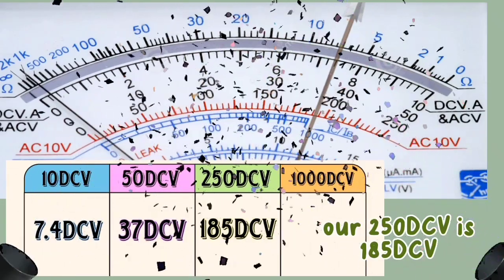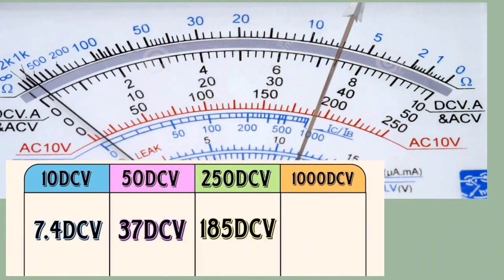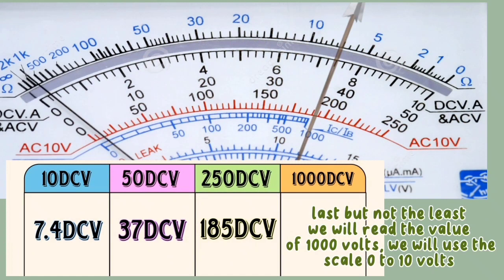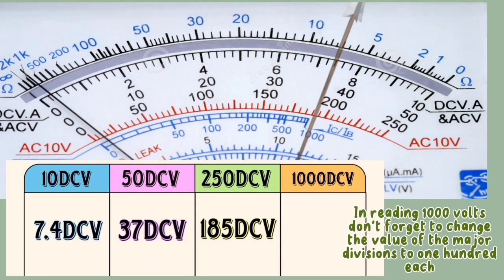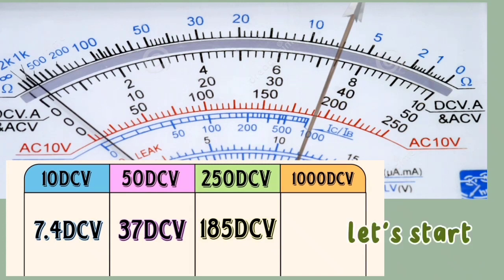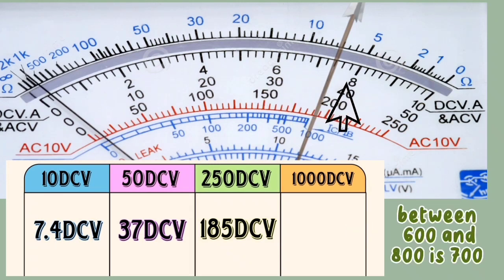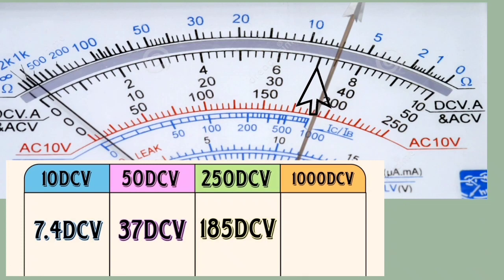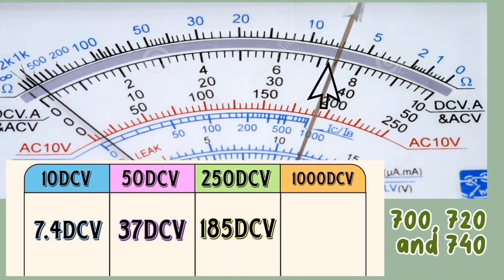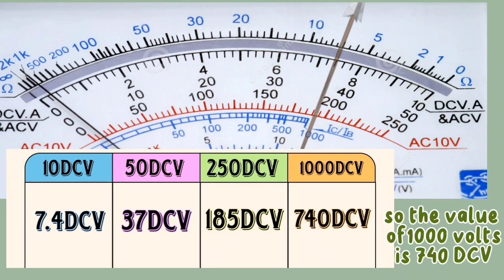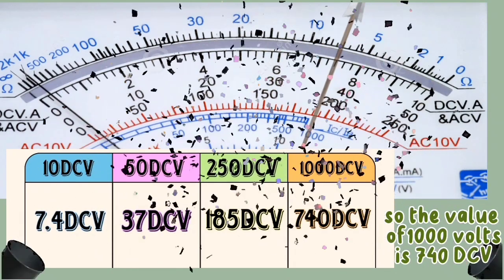Last but not least, we will read the value of 1000 volts. We will use the scale 0 to 10 volts. In reading 1000 volts, don't forget to change the value of the major divisions to 100 each. Let's start: between 600 and 800 is 700, 700, 720, and 740. So the value of 1000 volts is 740 DCV.